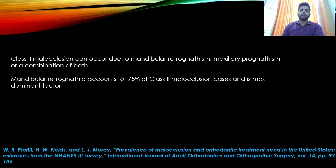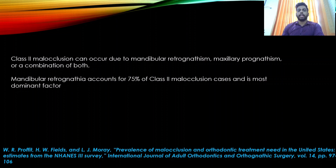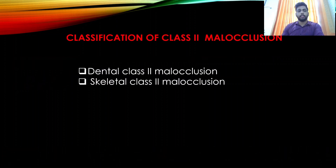Class 2 malocclusion can be due to mandibular retrognathism, maxillary prognathism, or a combination of both. Mandibular retrognathism accounts for 75% of Class 2 malocclusion cases and is the most dominant factor.